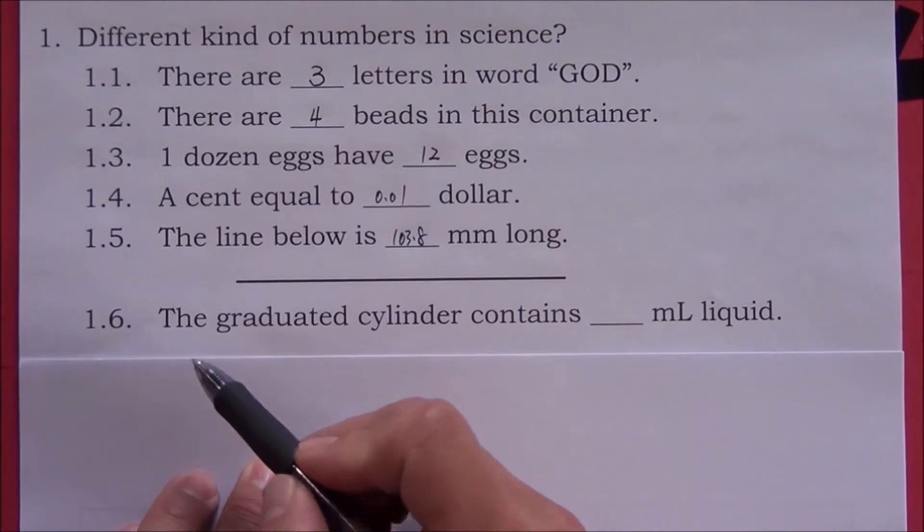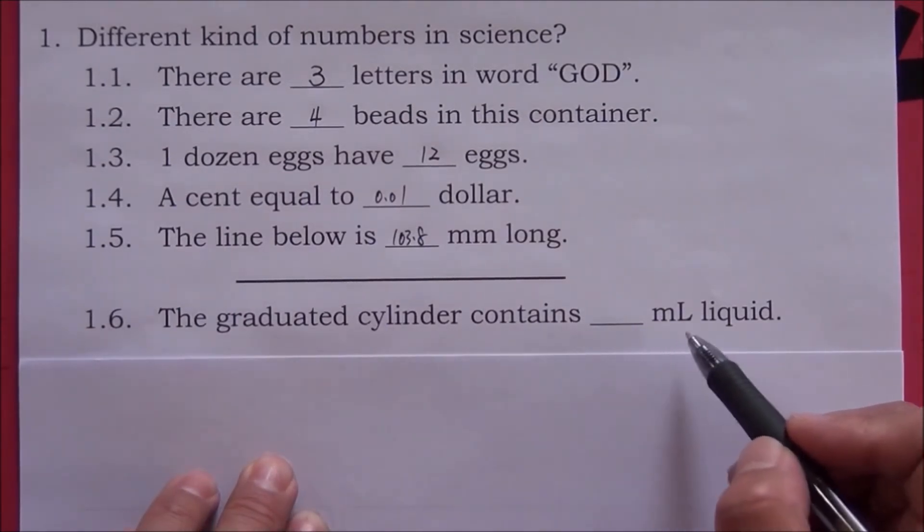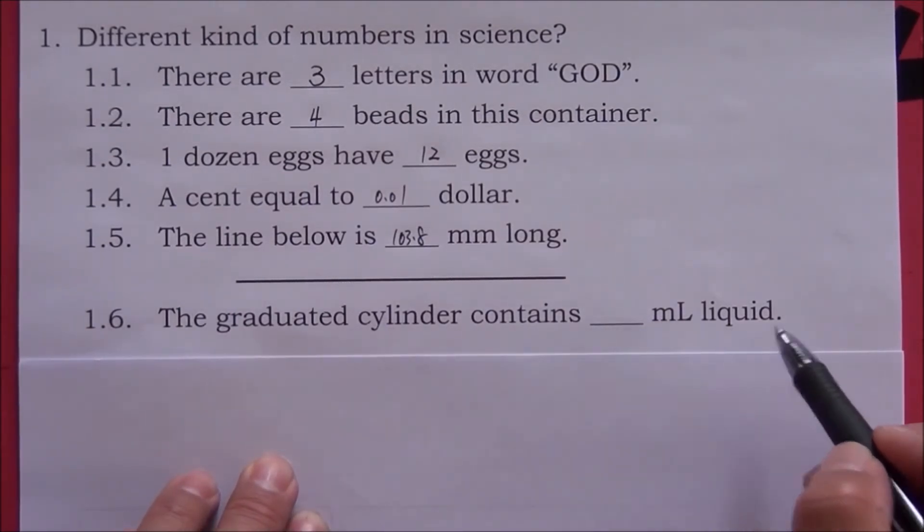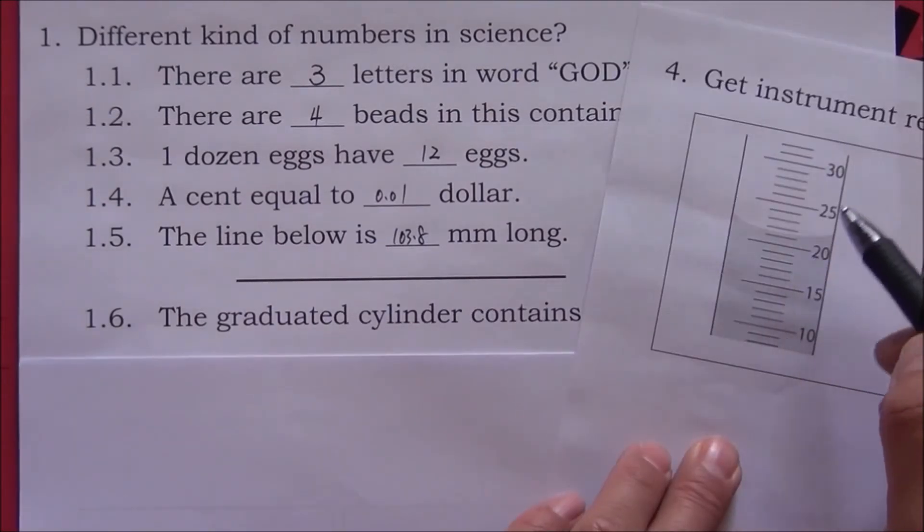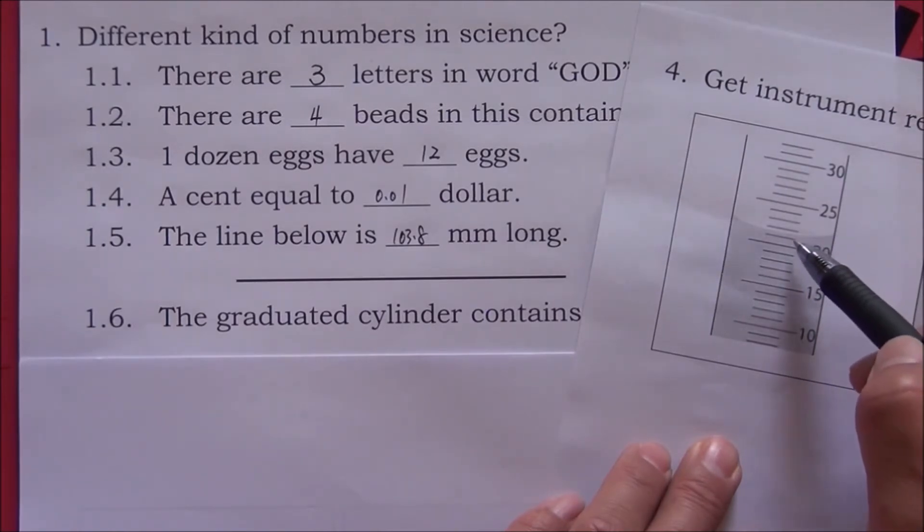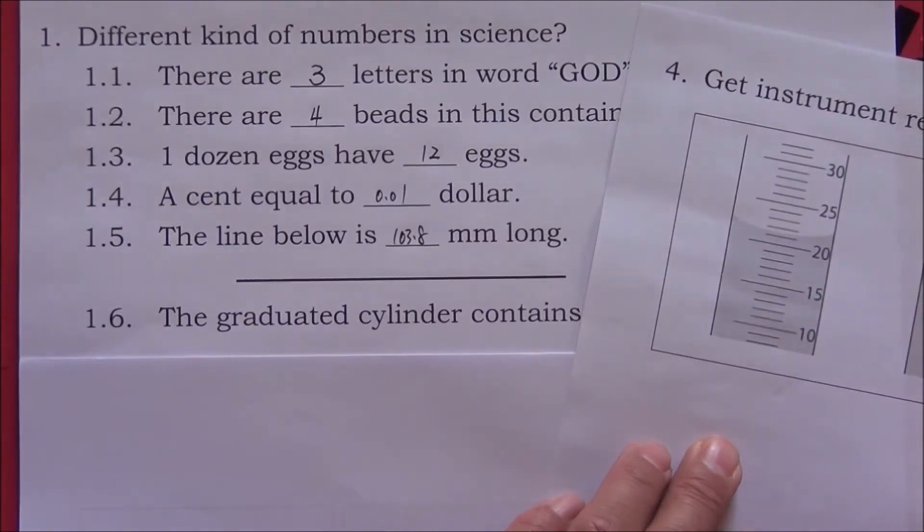Number six: The graduated cylinder. The bottom of the meniscus is between 21 and 22. It is kind of in the middle between these two lines. So the best estimate for this one is 21.5 mL.